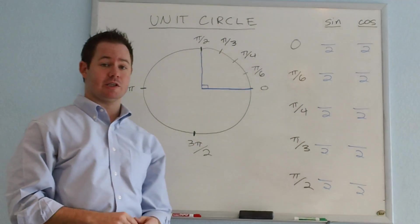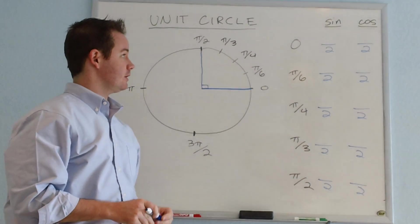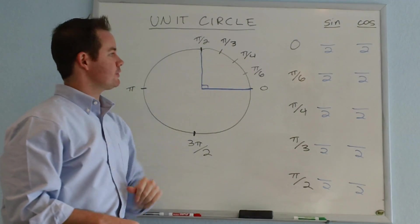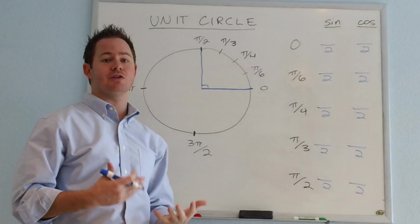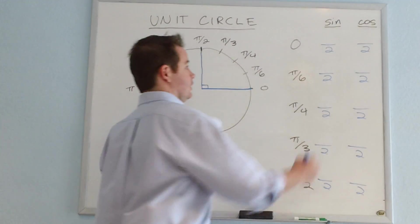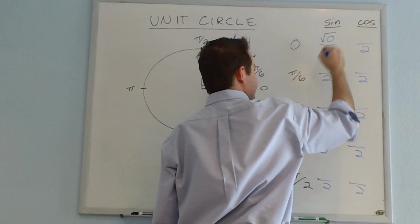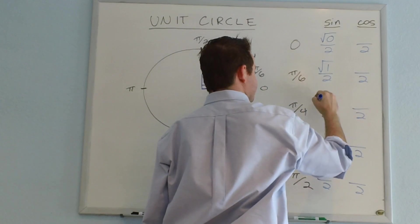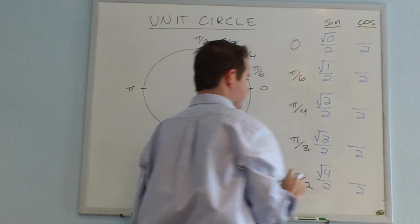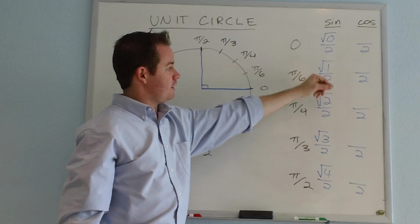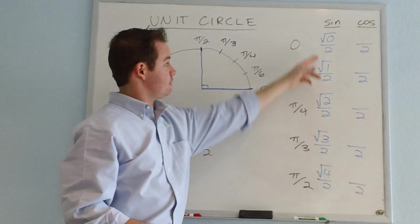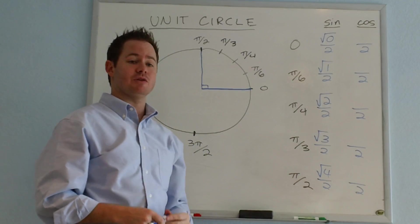The trick to memorizing it is to start with your sine values. I personally prefer sine because it counts upwards as you go from 0 to pi over 2, and I think that intuitively makes a little more sense to go in numerical order counting up. You're going to have a square root on each one, and you're going to start with 0 and simply count your way up one number at a time: square root of 0, square root of 1, root 2, root 3, and root 4. So we count from 0 all the way up to 4 for the sine values.